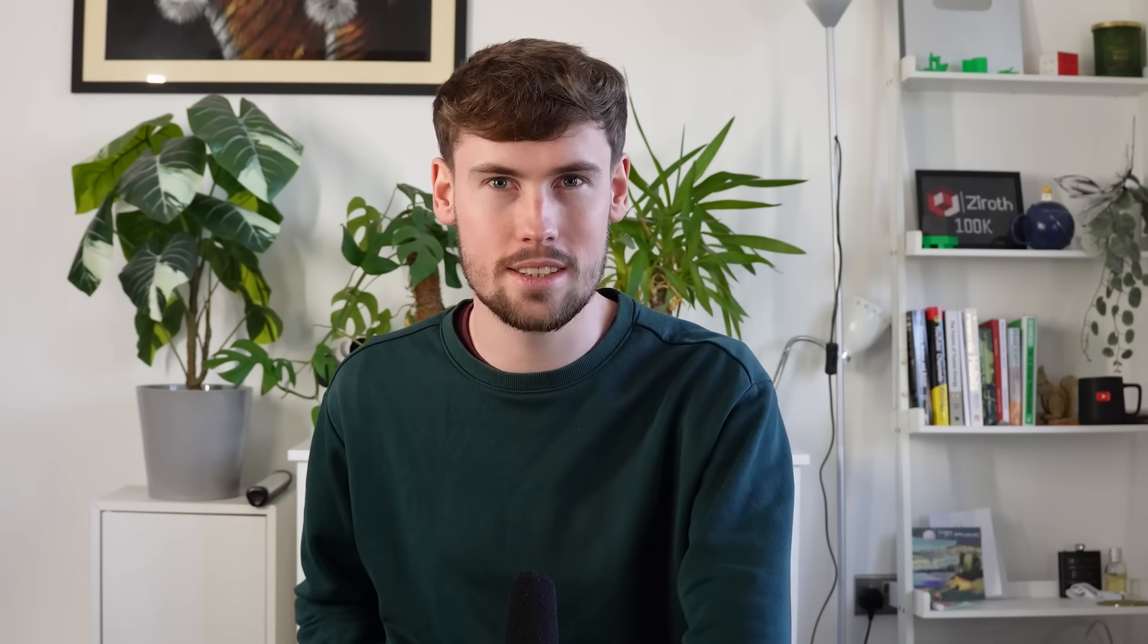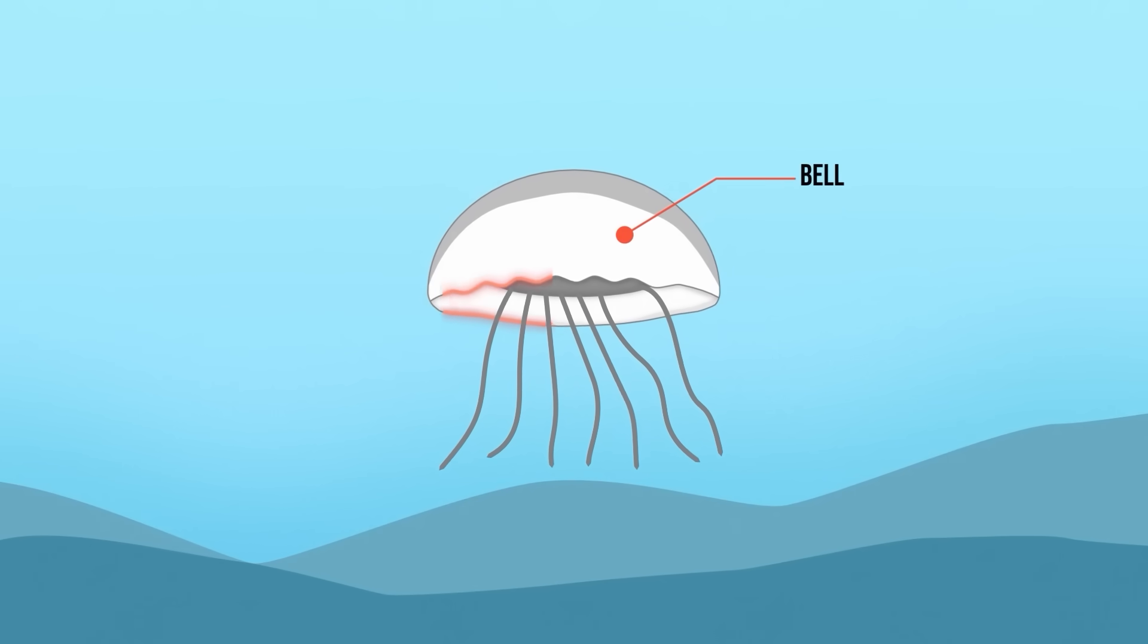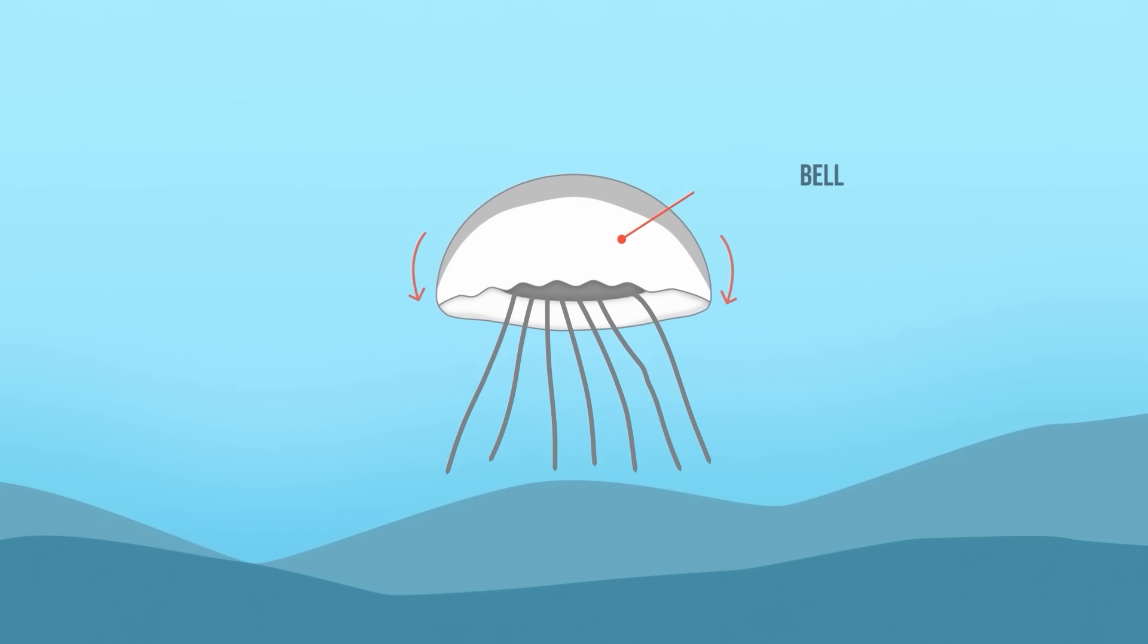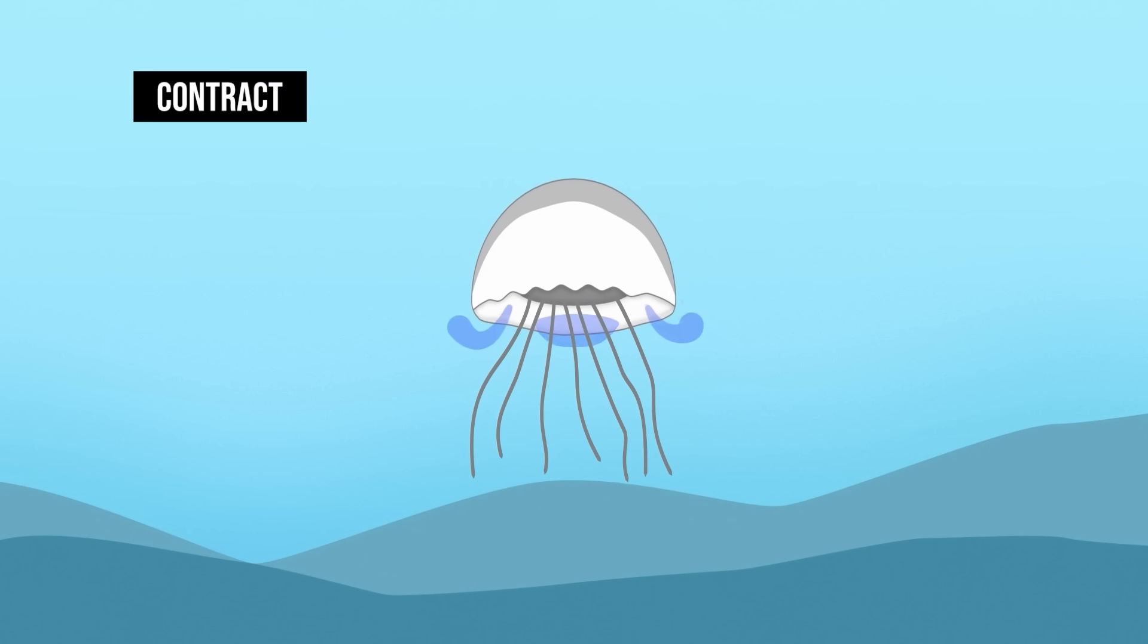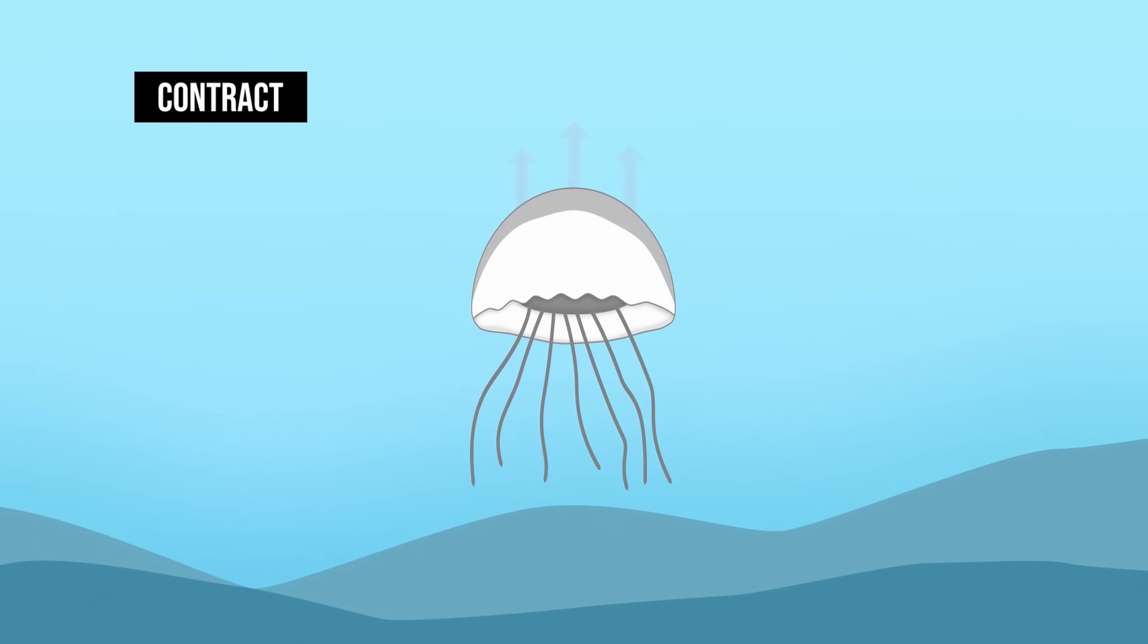Jellyfish move through the water using an efficient method of low pressure zones and vortices. Their movement begins with bell contraction, where muscles along the margin of their bell-shaped body contract, forcing water out and generating a jet-like thrust that propels them forward. This action forms a vortex ring, which is a circular water current at the edge of the bell that enhances propulsion.